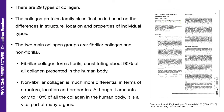There are two main collagen groups: fibrillar collagen and non-fibrillar. Fibrillar collagen forms fibrils naturally, constituting about 90% of all collagen present in the human body. Non-fibrillar collagen, on the other hand, is much more differential in terms of structure, location and properties. Although it amounts to only 10% of all collagen in the human body, it is a vital part of many organs.